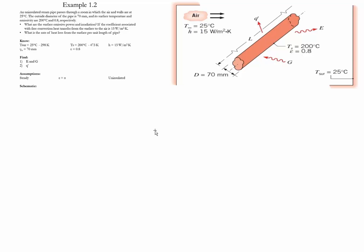Example 1.2. This is a steady radiation case in which we have a cylinder with a given diameter, a surface temperature given, and a surrounding temperature given. We have a value of emissivity, and we have to calculate the emissive power and the absorbed irradiation value. We also have to calculate the rate of heat transfer.